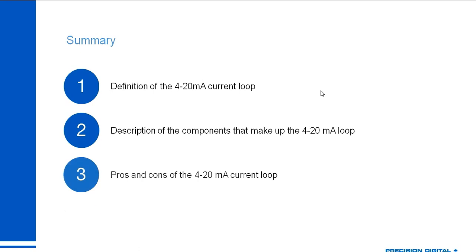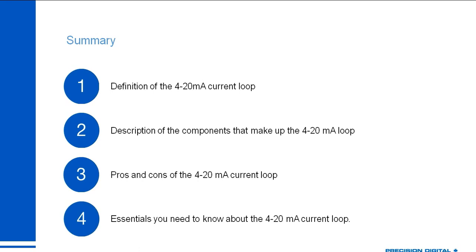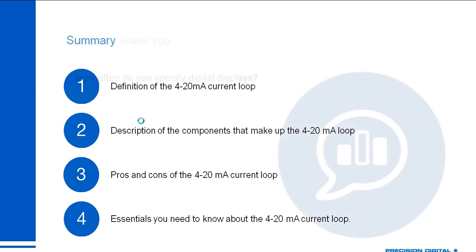To sum up, we talked about the definition of the 4-20mA current loop, what the different components are, and the pros and cons — there are a lot more pros than cons, especially for simpler systems. We also covered a few things to keep in mind when you start working with these loops.